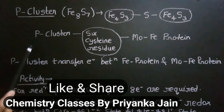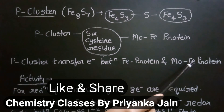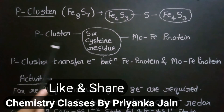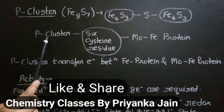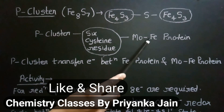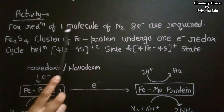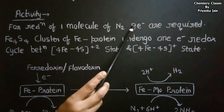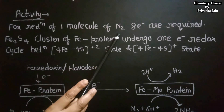The function of the P cluster is to transfer electrons between the iron protein and the MoFe cofactor. Electrons are first transferred from flavodoxin or ferredoxin to the iron protein, then from there to the P cluster, and then from the P cluster to the MoFe cofactor. For the reduction of one molecule of N2, 8 electrons are required, and these electrons are transferred from pyruvate via ferredoxin or flavodoxin to the iron protein.